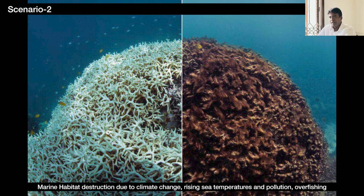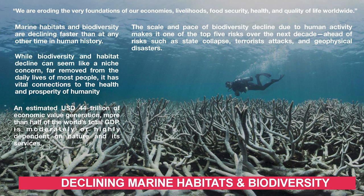Moving on to scenario two — this is a global phenomenon happening throughout the world, where we see massive marine habitat destruction occurring due to climate change. Rising sea temperatures, pollution, and overfishing are contributing to marine habitat destruction. Because of this, there is biodiversity loss, and the communities depending on marine biodiversity are also affected. Declining marine biodiversity and habitats indirectly triggers loss of livelihoods and food security for the communities involved.